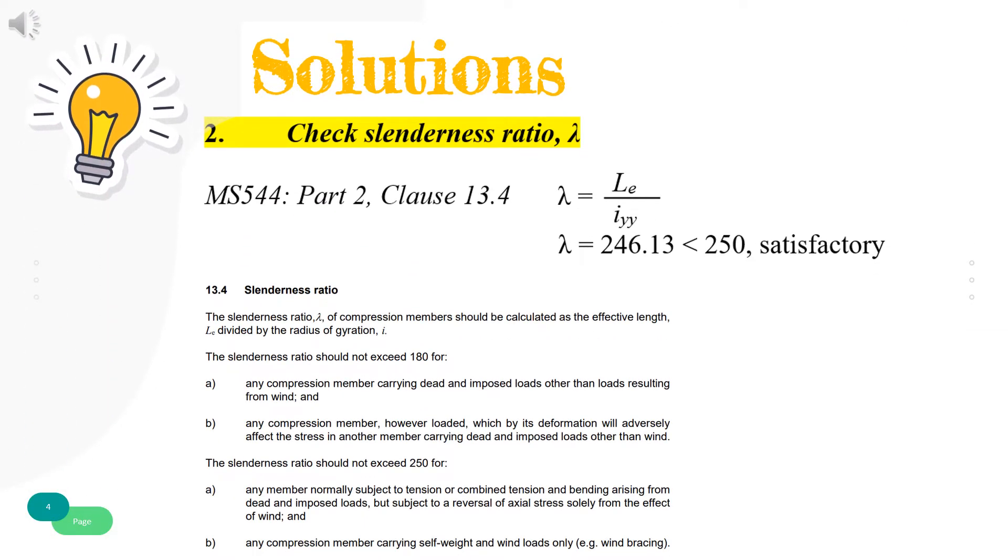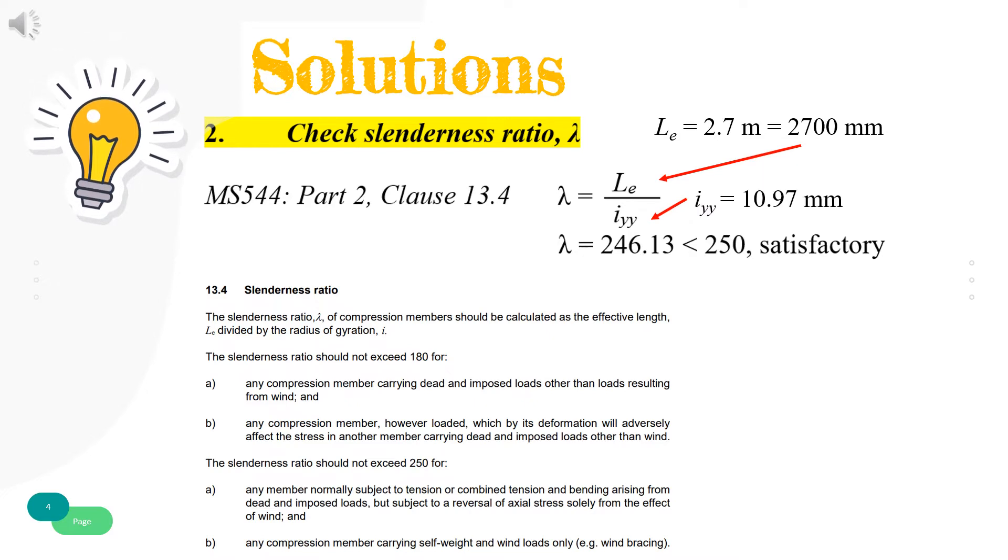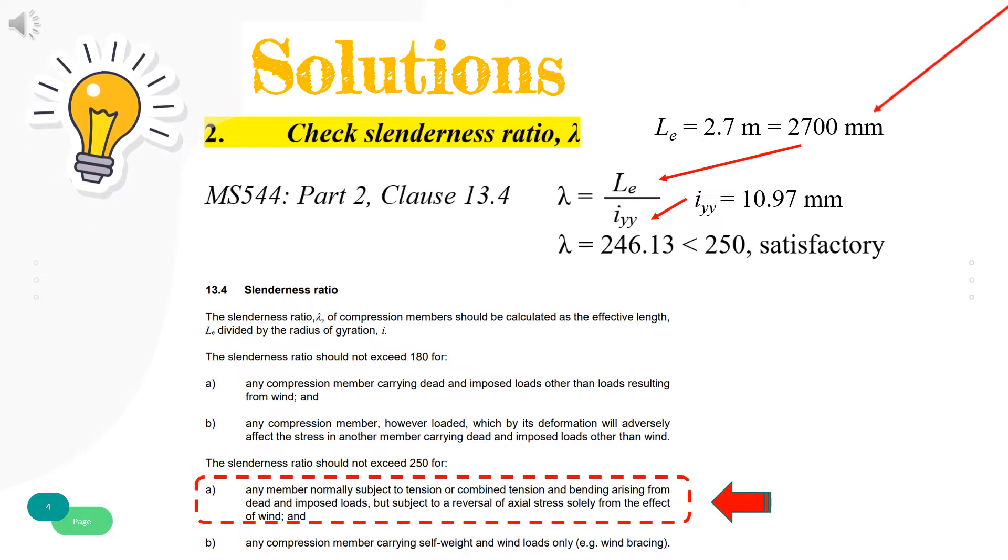The slenderness ratio of tension members should be calculated as the length divided by the radius of gyration. Refer to clause 13.4, the slenderness ratio should not exceed 250 for tension members carrying dead and imposed loads other than loads resulting from wind. The check is satisfactory since the slenderness ratio is less than the limit 250.